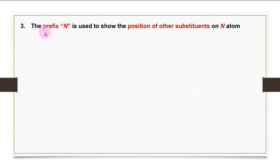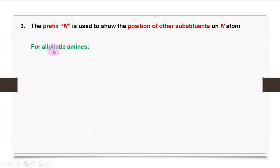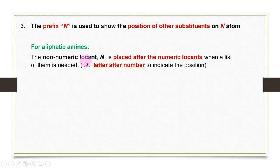The prefix N is used to show the positions of other substituents on the nitrogen atom. After identifying the main parent name, check if there are any substituents attached to the nitrogen atom. For aliphatic amines, the non-numeric locant N is placed after the numeric locant when a list is needed — meaning letter after number to indicate positions.